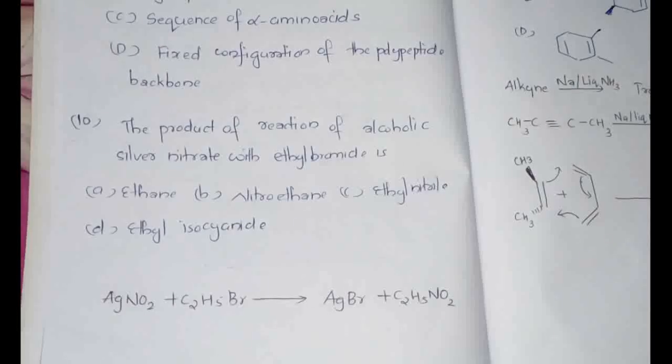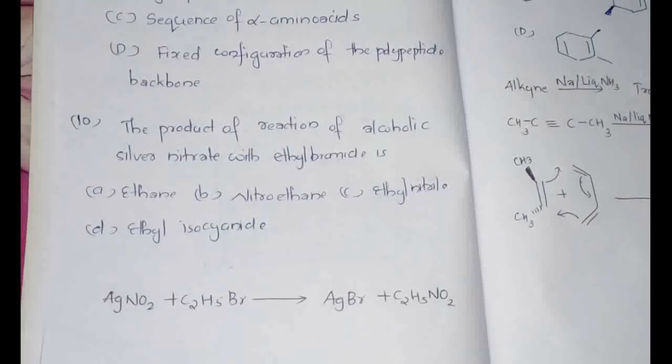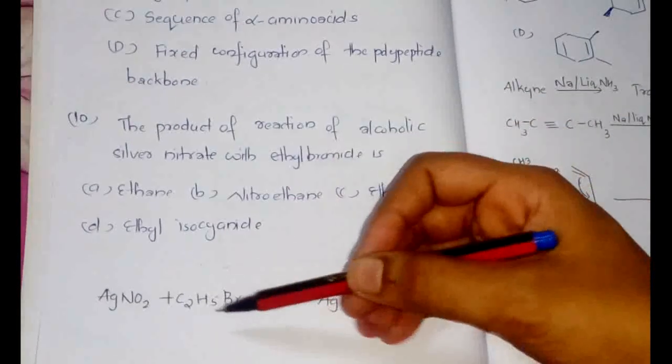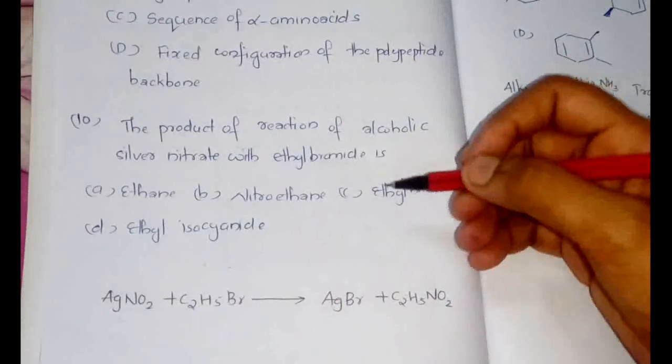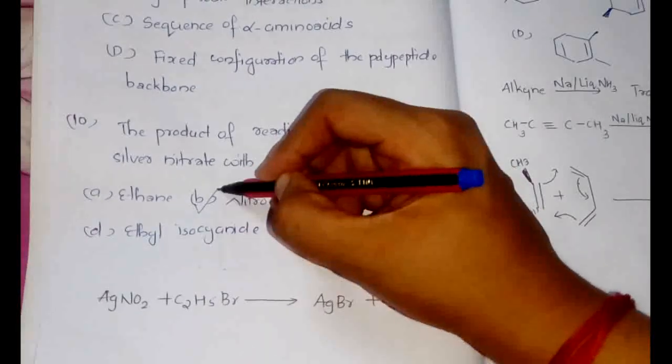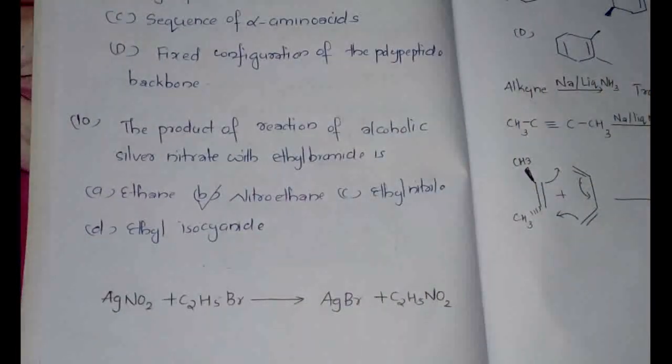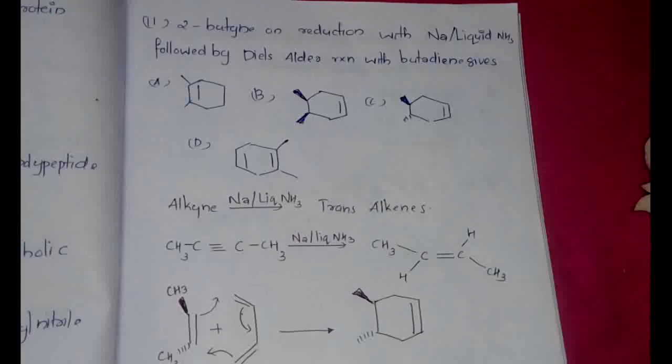Now this question: the product of reaction of alcoholic silver nitrate with ethyl bromide is. This reaction you might have done in your practical classes, that is when you are doing the qualitative organic analysis. So the reaction is AgNO2 plus C2H5Br gives AgBr plus C2H5NO2, that is nitroethane. And silver bromide would be the product of this particular reaction.